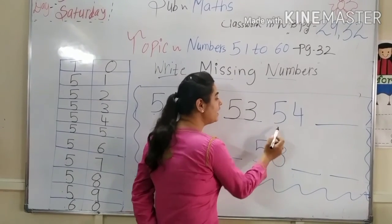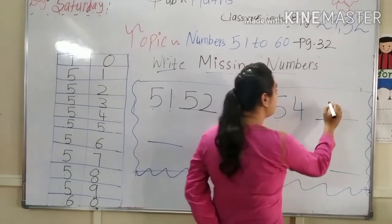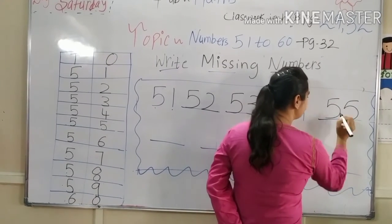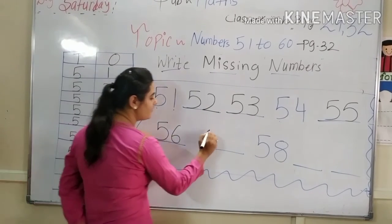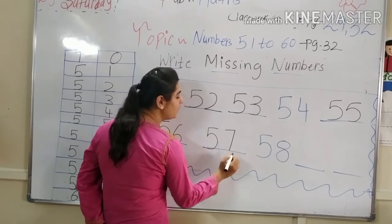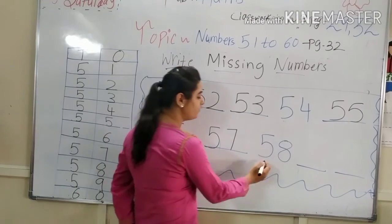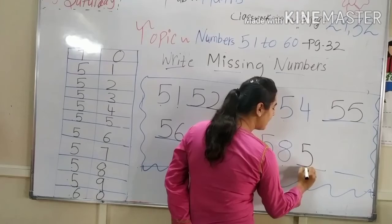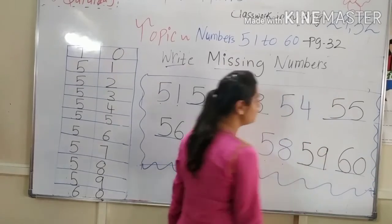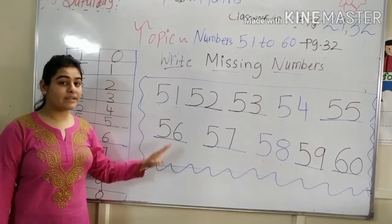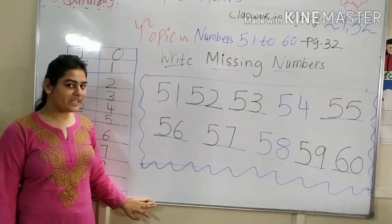54 already likha hua hai. Then after: 5, 5 — 55. Here we write 55. Then next: 5, 6 — 56, 5, 7 — 57. Kids, write with me — aapko yahan par ye jo missing numbers hain, aapko likhne hain. Then 5, 8 — 58. After? Yes, 5, 9 — 59. And last: 6, 0 — 60. So we completed our missing numbers. Yahan par jo numbers missing the, unko humne complete kar diya. Yes, humne 51 to 60 ke missing numbers complete kar diye.